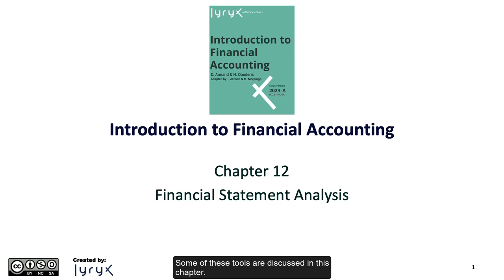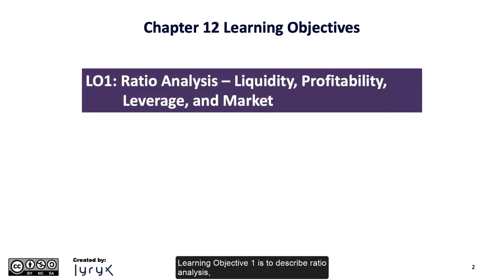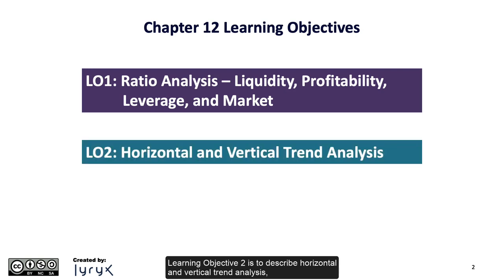Some of these tools are discussed in this chapter. Chapter 12 is comprised of two learning objectives. Learning objective 1 is to describe ratio analysis and explain how the liquidity, profitability, leverage, and market ratios are used to analyze and compare financial statements. Learning objective 2 is to describe horizontal and vertical trend analysis and explain how they are used to analyze financial statements.